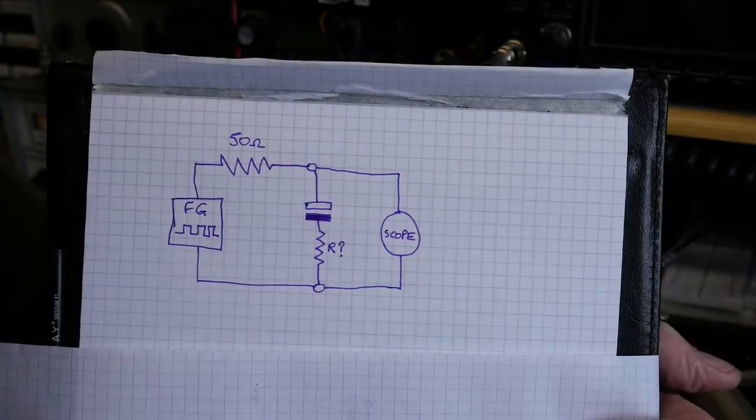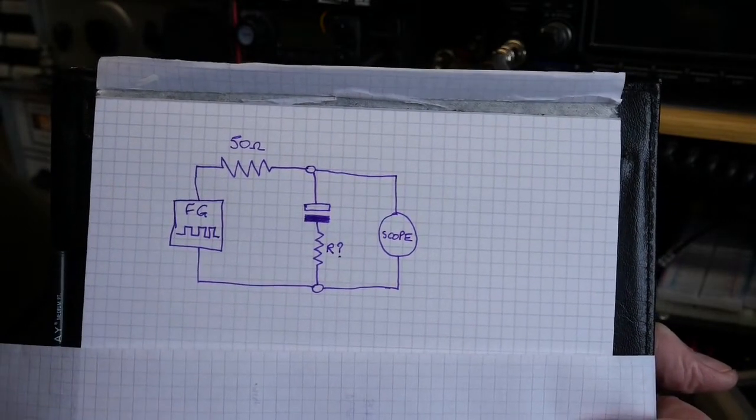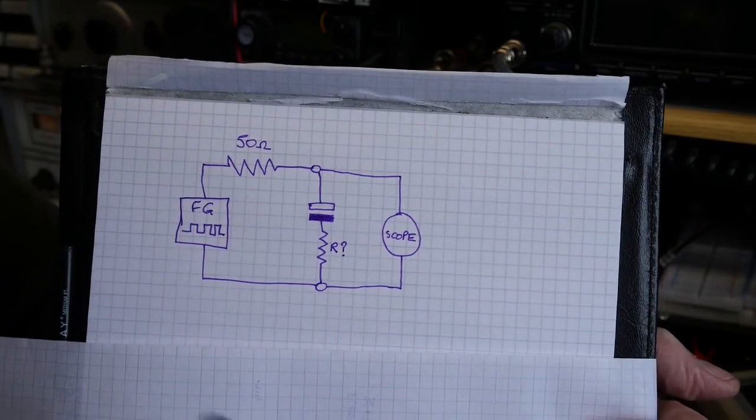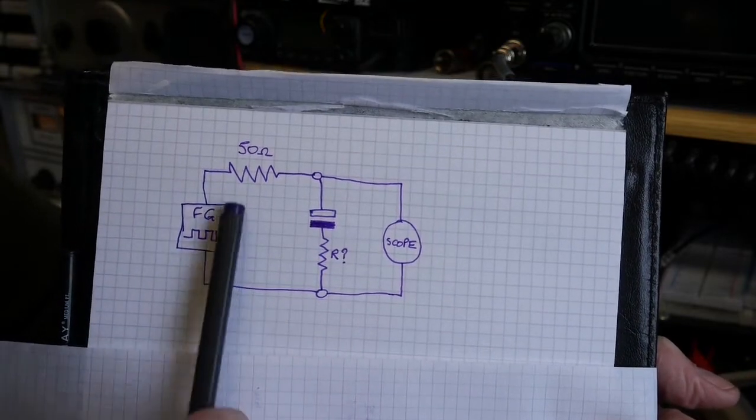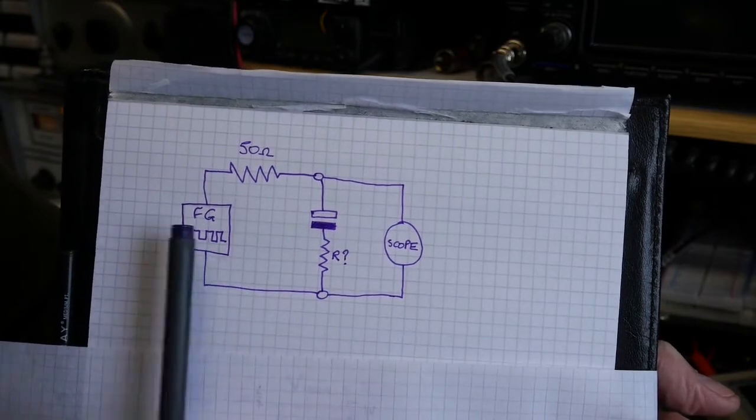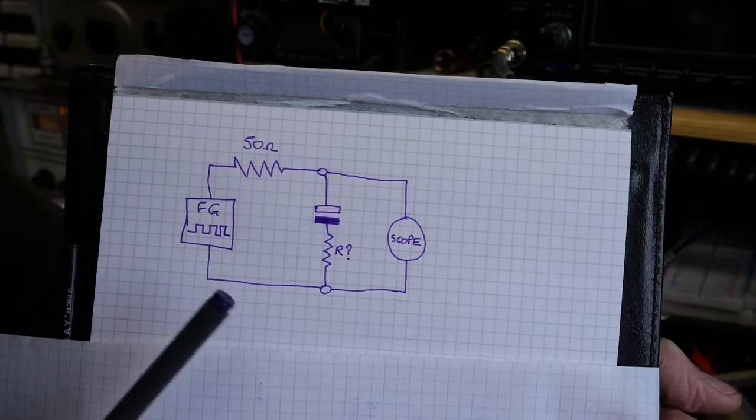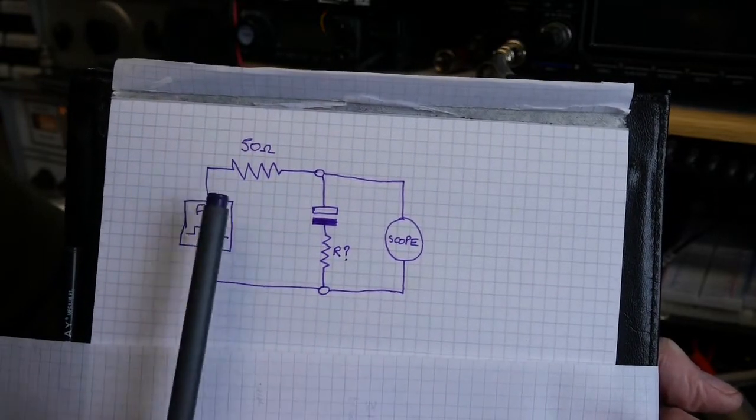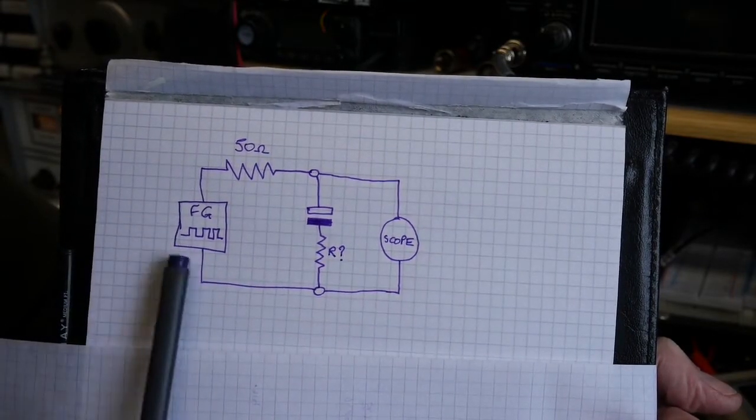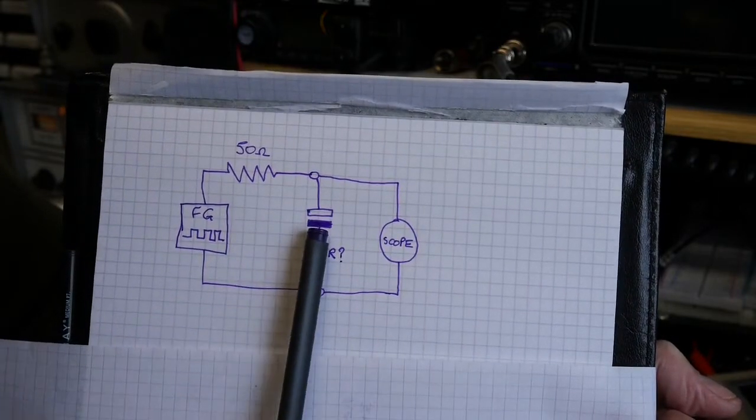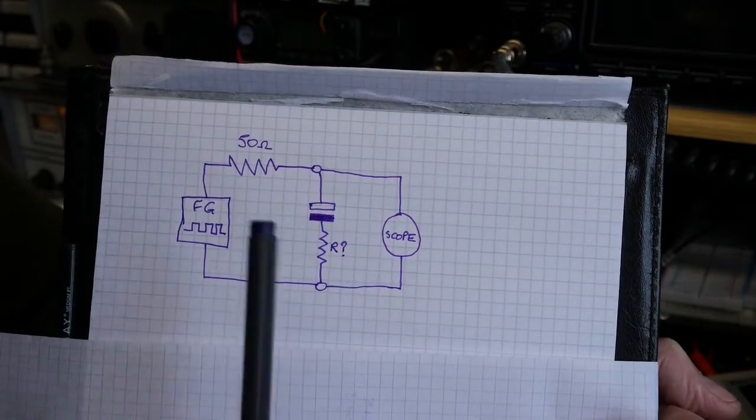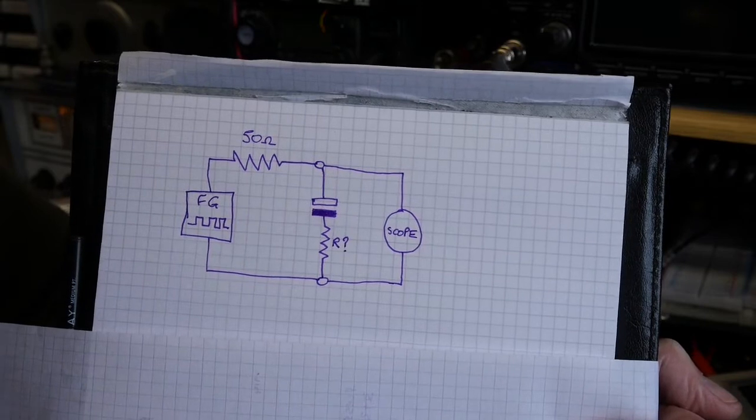This is the arrangement of the circuit. I've borrowed this from W2AEW's excellent video. We've got the function generator producing a one volt square wave with the bottom line being zero, so there's no negative component. That 50 ohms is simulating the output impedance of my signal generator, then we've got the capacitor we're testing and our question mark is effectively what the equivalent series resistance is.